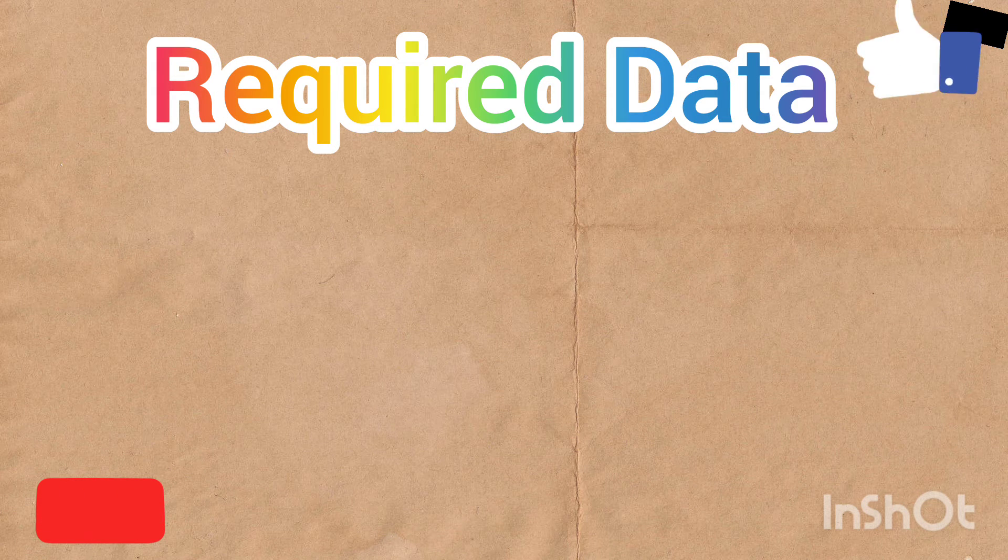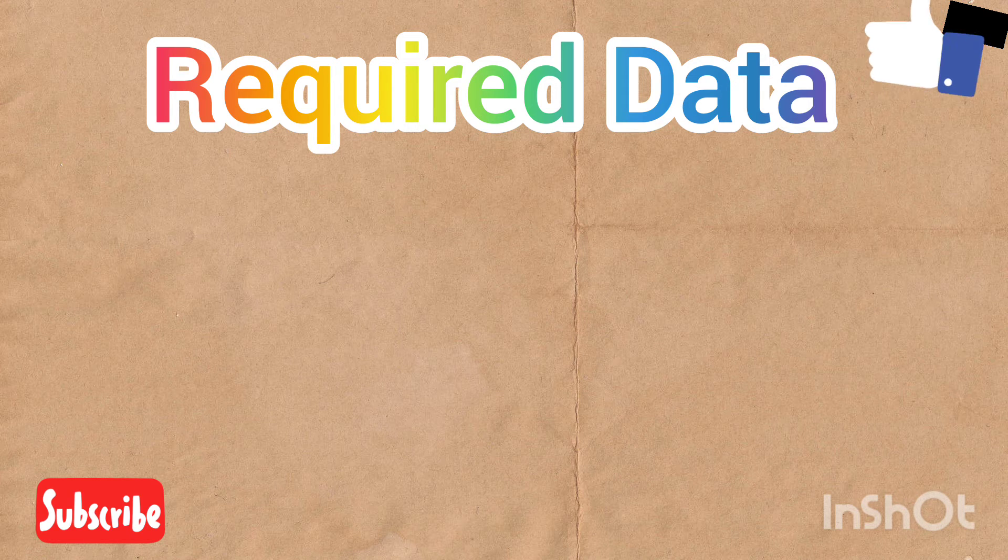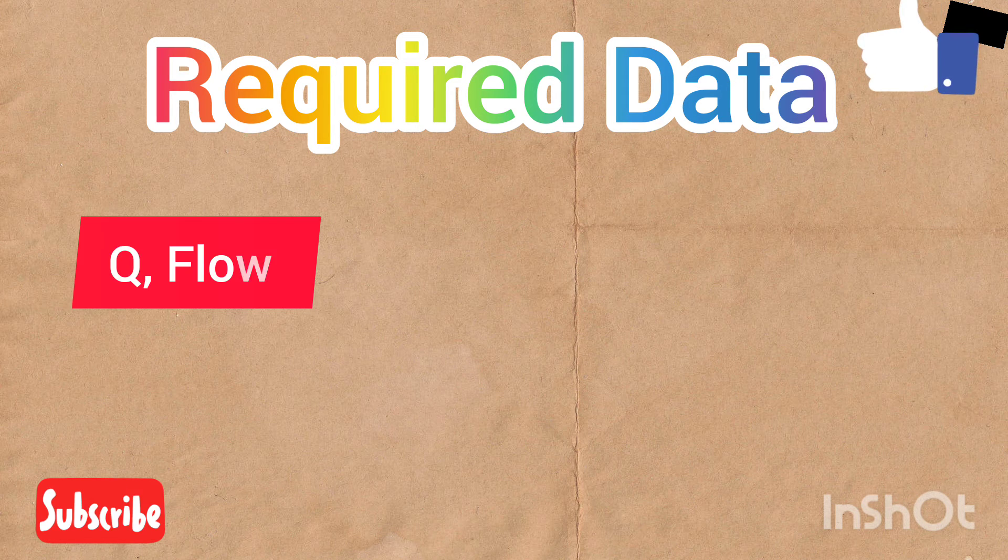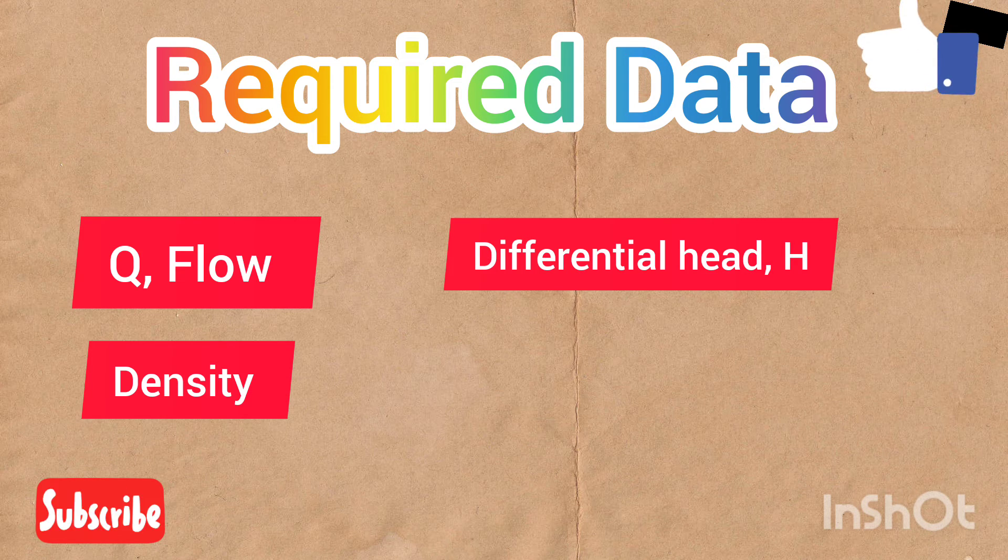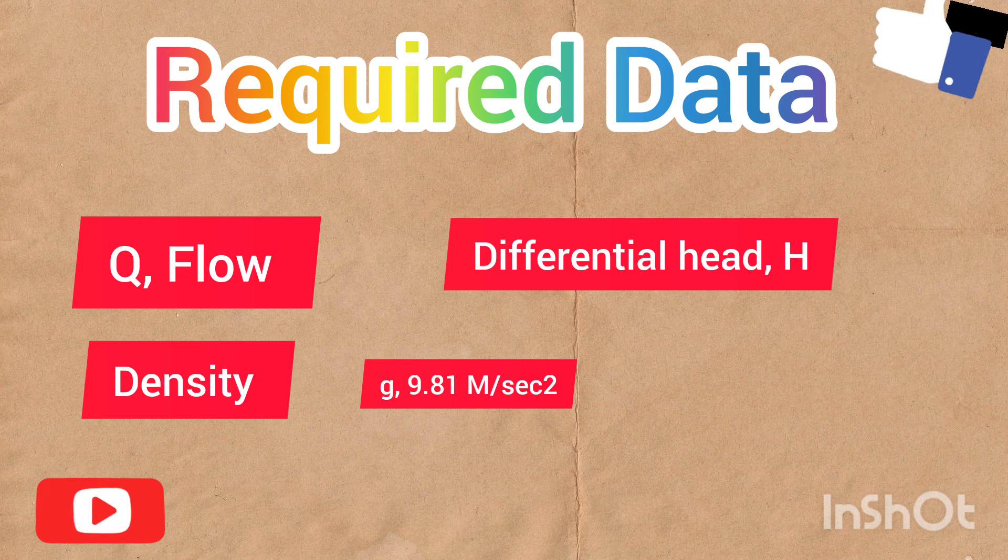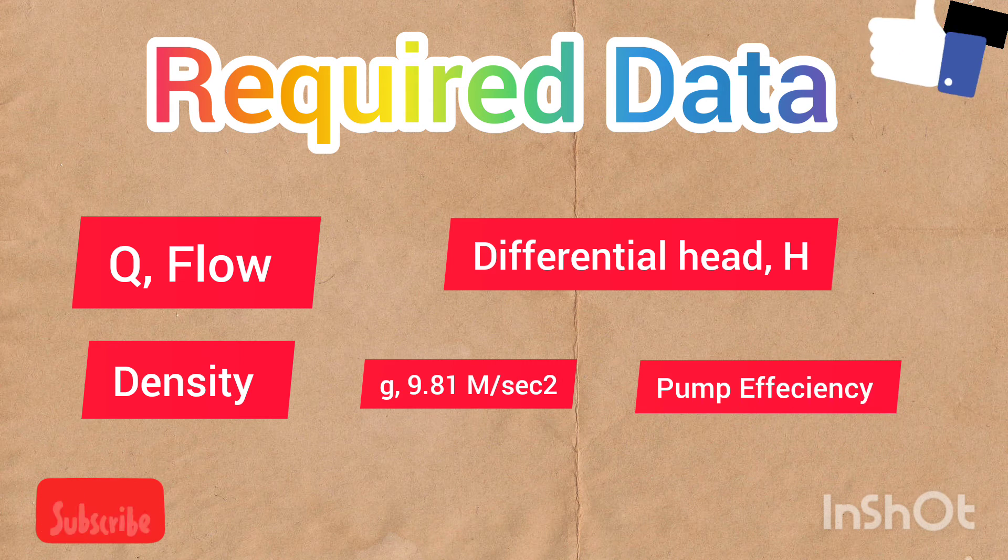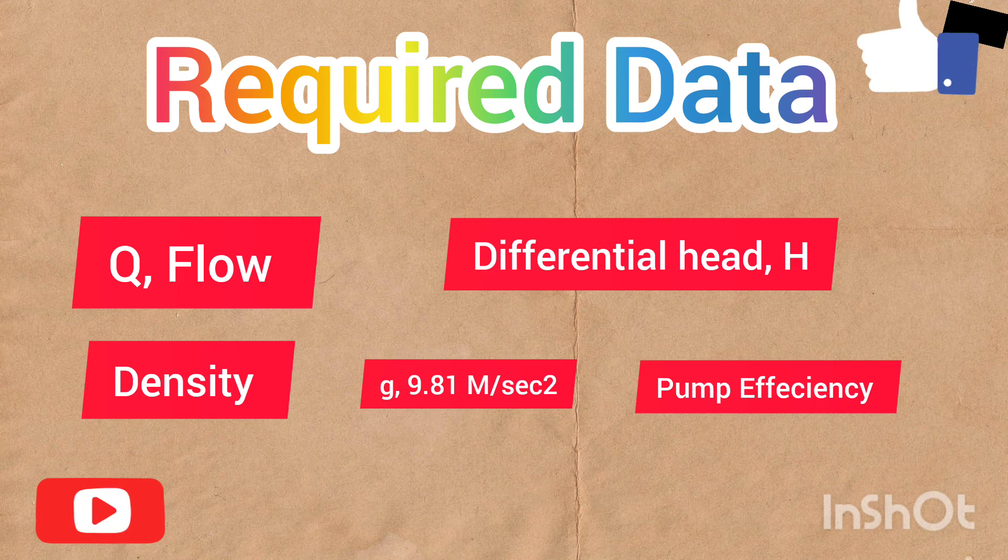Let's discuss the data which is very important to calculate the power required for a centrifugal pump. We need flow rate in meter cube per second, differential head in meter, density in kg per meter cube, the g value which is 9.81 meter per second squared, and pump efficiency.